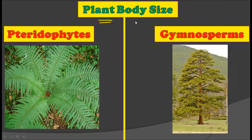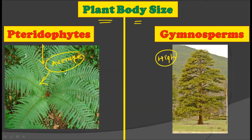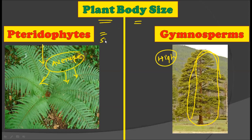The next difference is about plant body size. Pteridophytes are average-sized plants and do not grow as luxuriantly as gymnosperms. Gymnosperms are very tall-growing plants with tremendous height and lifespan. Pteridophytes generally show average size and average age. So the body size of pteridophytes is generally small while the body size of gymnosperms is generally large.